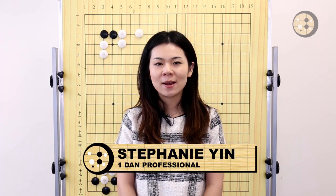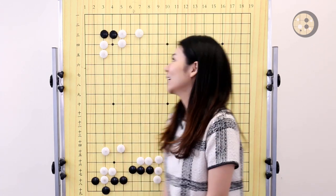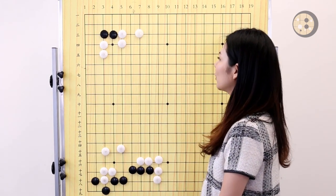Hi everyone, welcome back to our Life and Death series. My name is Stephanie Yin. In this video, we're going to talk about one to four down questions. Let's start from the upper left corner first.